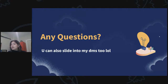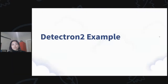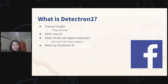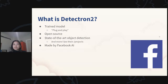Let's move to the Detectron 2 example. What is Detectron 2? Detectron 2 is one of the pre-trained models you can plug and play with immediately. It's an open source model — all the code is available on GitHub. It's got state-of-the-art object detection and more features on top of that. In the repository, you can check out their projects folder, which includes pose estimation and some other interesting packages. It's made by Facebook AI.